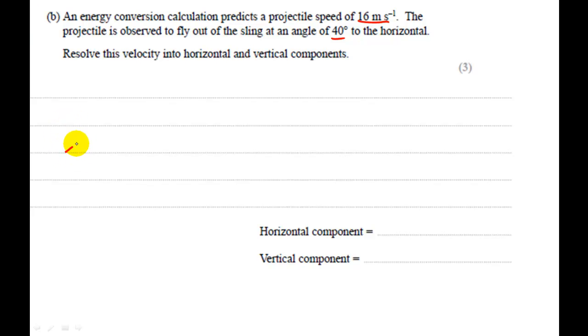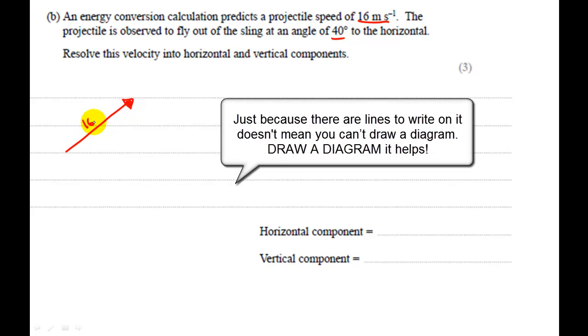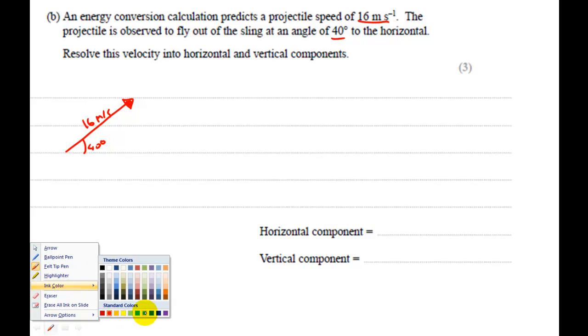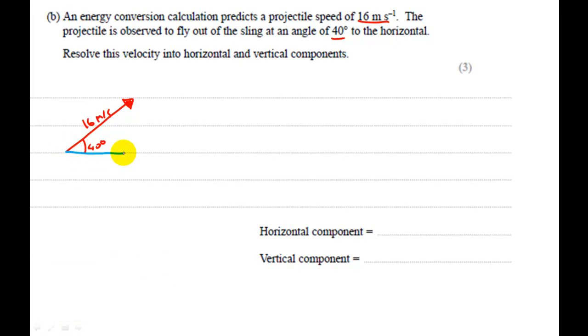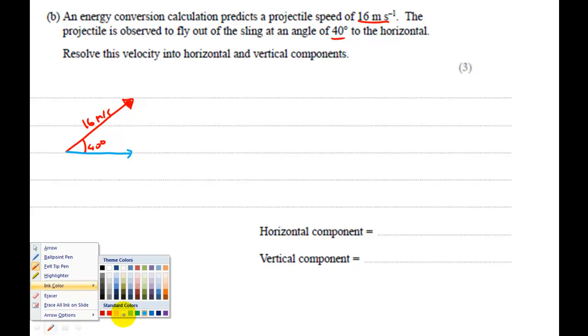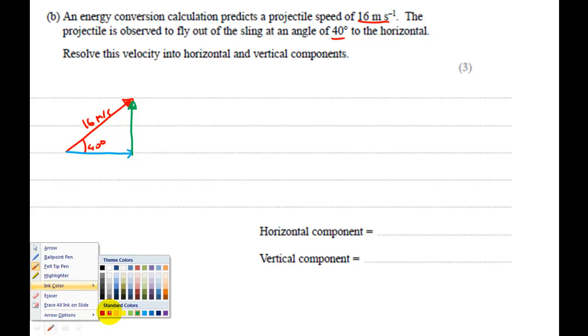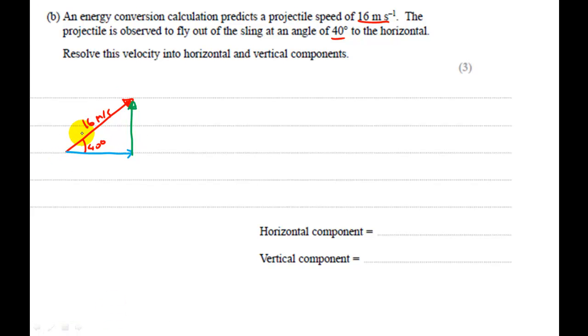Right, so we've been told this. We've been told the size and direction of this arrow. It is 16 meters per second, and it is at an angle of 40 degrees to the horizontal. Now, what we want to do is break it up into its horizontal component and its vertical component. Let's use green. These two vectors should add up to the projectile's velocity.